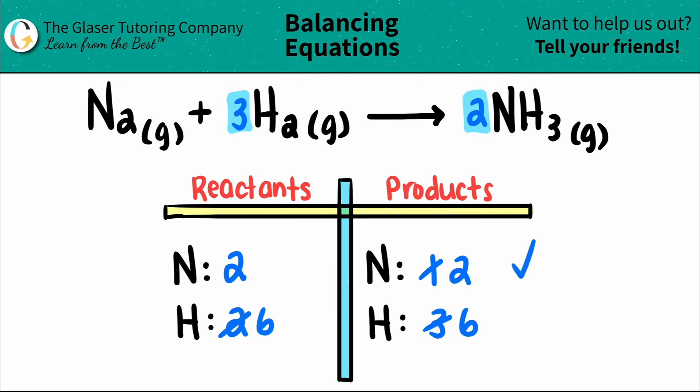And the nitrogens are balanced. And the hydrogens are balanced. So the balanced equation is we have one N2 plus three H2s, which will yield two NH3s.